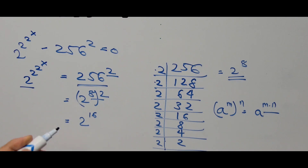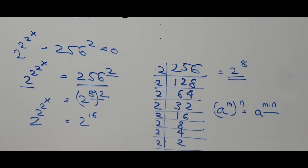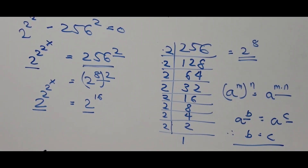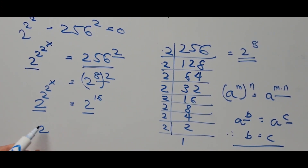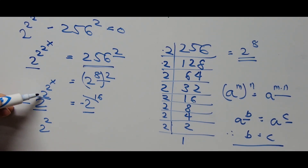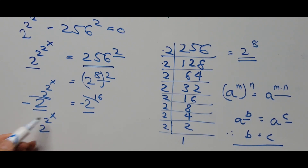The equation is now: 2 to the power of 2 to the power of 2 to the power of x equals 2 to the 16th power. Since both sides have the same base, we apply the rule that if a^b = a^c then b = c, equating the exponents. This gives us 2 to the power of 2 to the power of x equals 16.